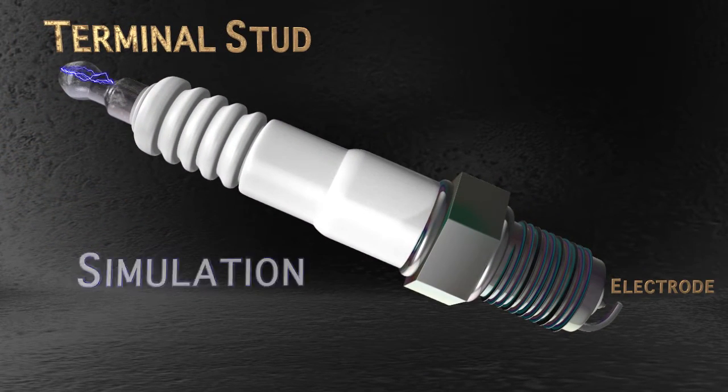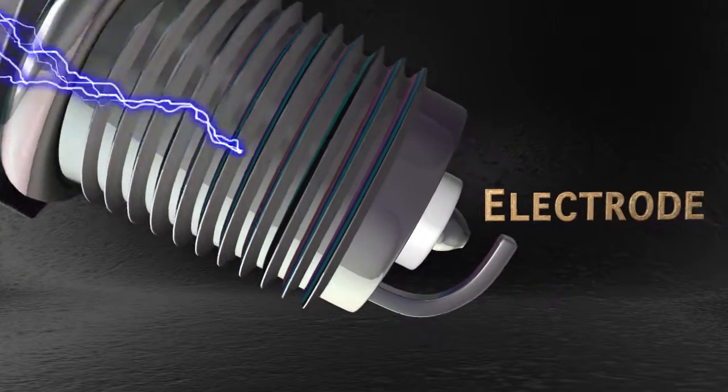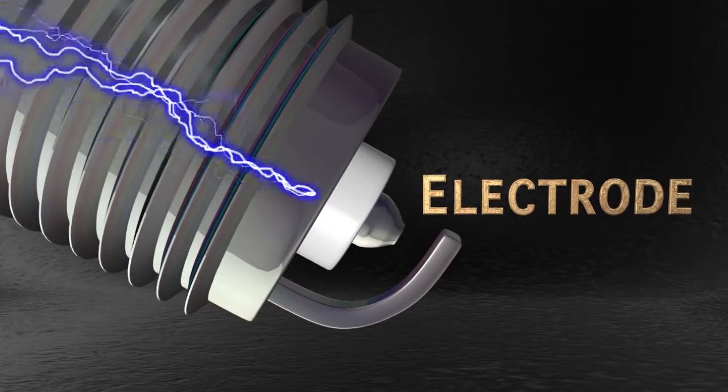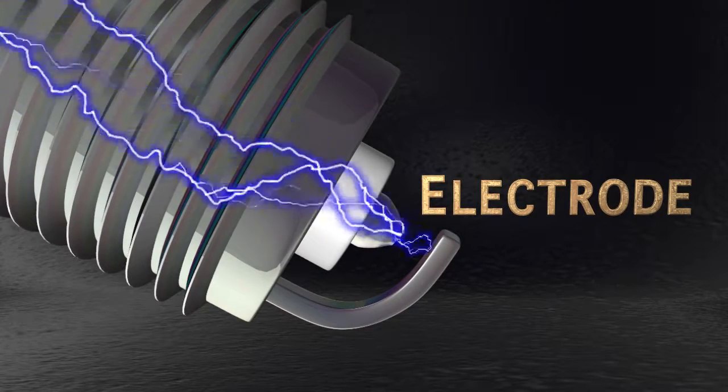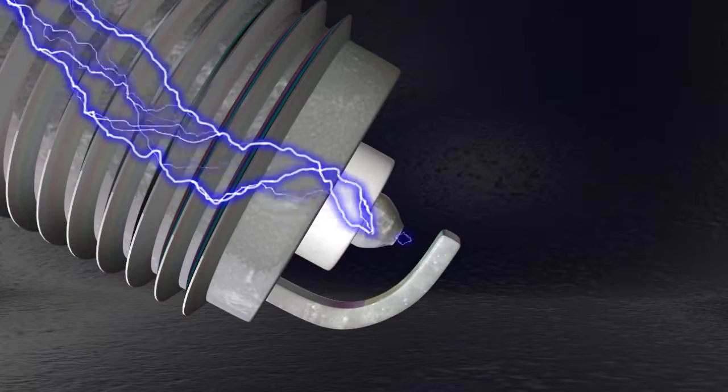High voltage travels from the terminal stud to the center electrode seen here, where it forces electricity to jump across the gap creating a spark. This spark ignites a mixture of air and fuel in a process called combustion.